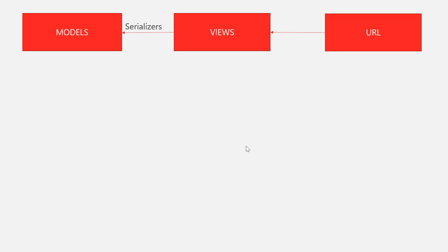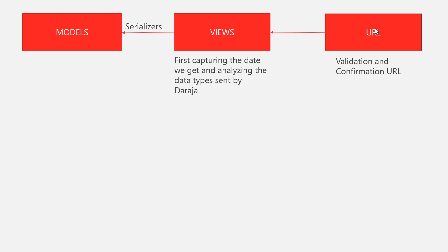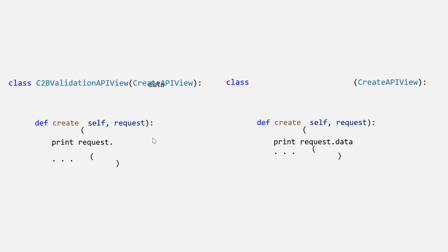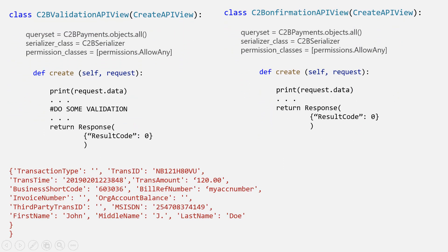Similarly, instead of one URL we are going to have two URLs, and we're also going to have two views because each URL has its own view. The first view is the validation API view where Safaricom sends you information and you process it. We'll also have a C2B confirmation API view, which is the last step where you save the transaction after accepting or rejecting it.